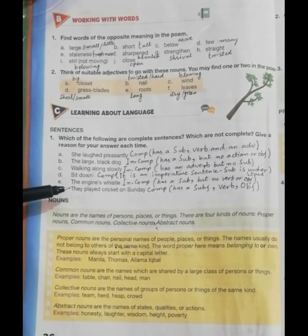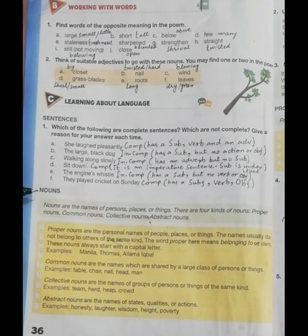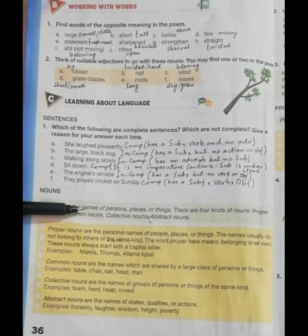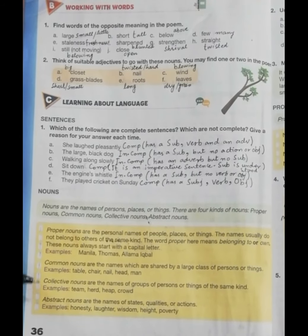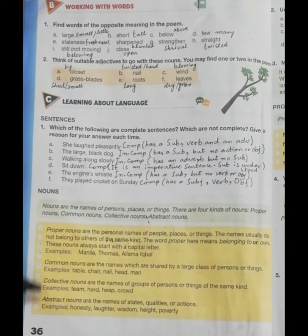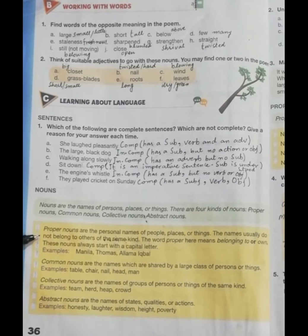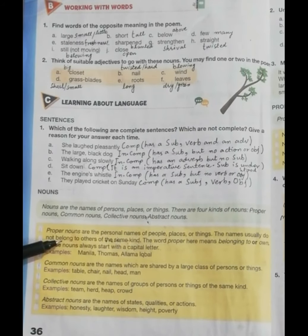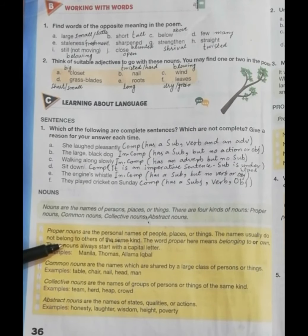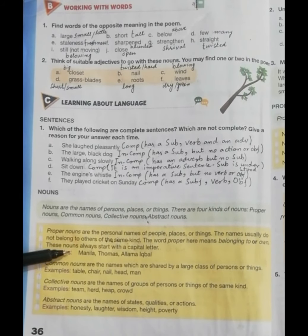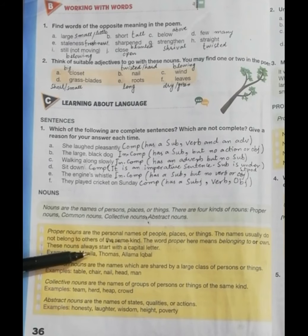The next topic is nouns. Nouns are the names of persons, places, or things. There are four kinds of noun: proper noun, common noun, collective noun, and abstract noun. Proper nouns are the personal names of people, places, or things. These names usually do not belong to others of the same kind. The word 'proper' here means belonging to one specifically. These nouns always start with a capital letter — like Manila, Thomas, and Allama Iqbal.